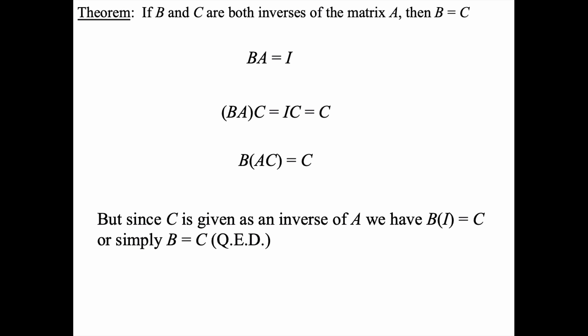Now an interesting other way that students often come up with to establish this fact is they simply multiply on the right side of matrix A. They multiply B on the right, C on the right, and they say AB equals the identity, AC equals the identity. Hey let's subtract.